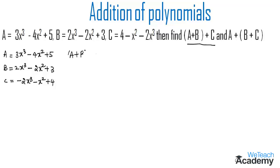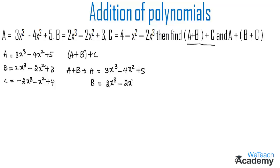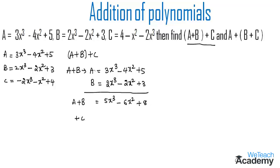To find (A+B)+C, we first find A+B. Writing A as 3x³ - 4x² + 5 and B as 2x³ - 2x² + 3, we add them: 3x³ + 2x³ = 5x³, -4x² - 2x² = -6x², and 5 + 3 = 8. So A+B = 5x³ - 6x² + 8.